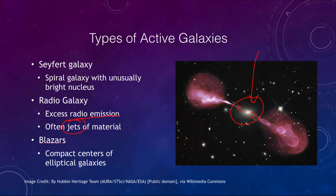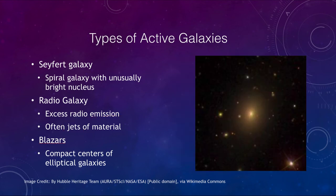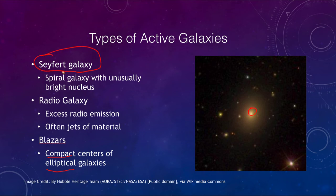We also call what we see at the centers of these galaxies a blazar. A blazar is actually the compact center of the galaxy — the very compact material at the center of, in most cases, an elliptical galaxy. We're beginning to see a pattern: certain types of active galaxies are associated with certain types of normal galaxies. Seyfert galaxies are associated with spiral galaxies, whereas blazars are related to elliptical galaxies.